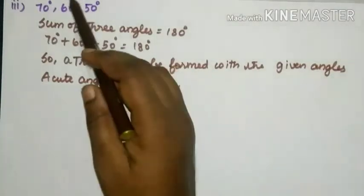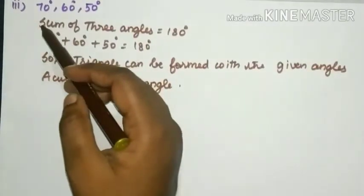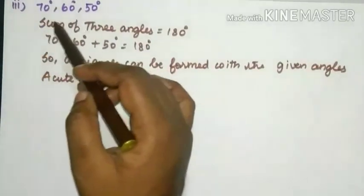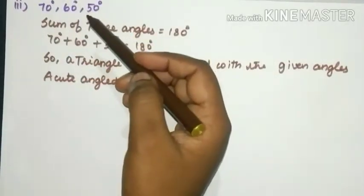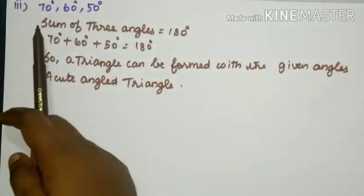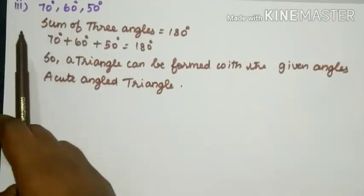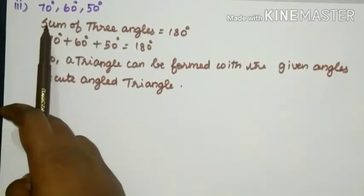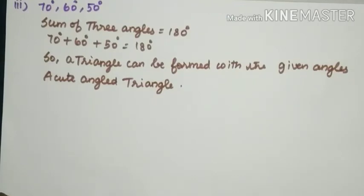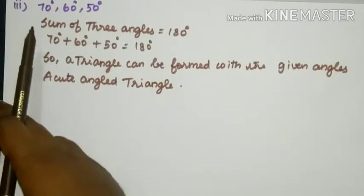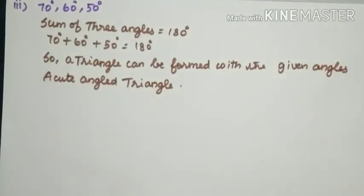Students, keep in mind: if one of the given angles is equal to 90°, it is a Right Angled Triangle. If one of the angles is greater than 90°, it is an Obtuse Angled Triangle. Here all the given angles are less than 90°, so it is called an Acute Angled Triangle.